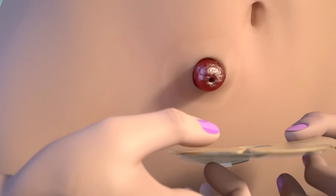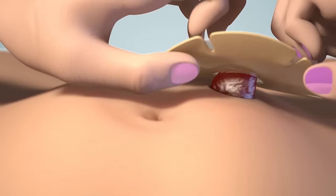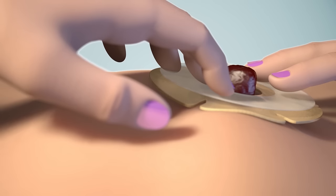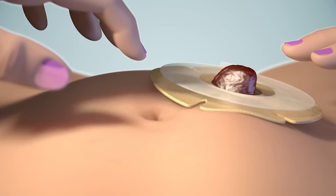Place the flange over the stoma and then adhere the flange to the skin by gently pressing with your fingers all the way around to ensure the flange is securely stuck to your skin.